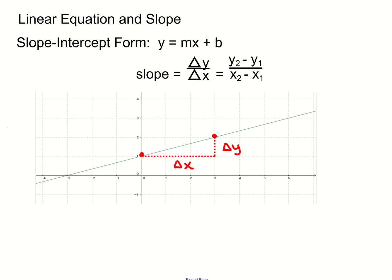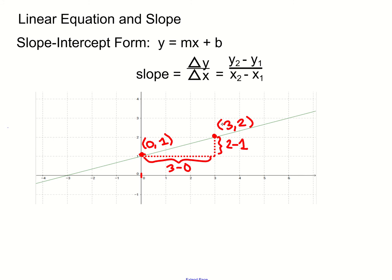You want to pick two points that look nice, meaning they're actually on the unit grid and not between grid lines. For example, nice points would be 3 comma 2 and 0 comma 1. So subtracting the x-coordinates gives 3 minus 0, and subtracting the y-coordinates gives 2 minus 1. The change in y is 1, the change in x is 3, so the slope is 1 over 3.